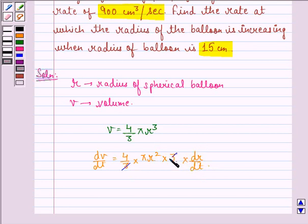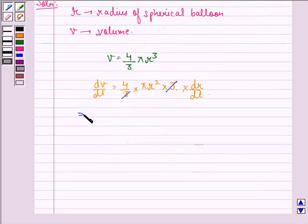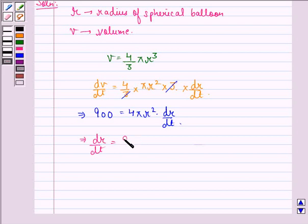The 3 cancels with 3. Since dV/dt is given to be 900, we have 900 = 4πR² × dr/dt. This implies dr/dt = 900/(4πR²).